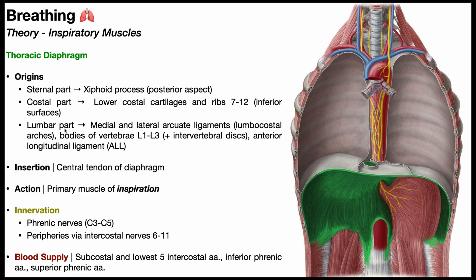The lumbar part of each hemidiaphragm originates from multiple structures: number one, the medial and lateral arcuate ligaments; the bodies of vertebrae L1 through L3 and their associated intervertebral discs; and also the anterior longitudinal ligament associated with the vertebral body.